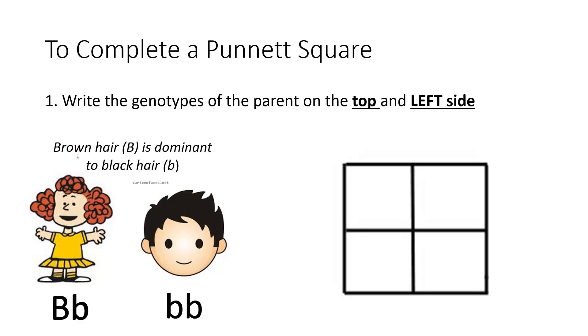In this example, brown hair, uppercase B, is dominant to black hair, lowercase b. The brown hair girl has a big B, little b. And then the boy that has black hair has a recessive trait of two lowercase b's. So my first step is to write the genotype on the top and left-hand side. I'll take the big B, put it on the top, and then I'll take the genotype of the father and put it on the left-hand side. I have completed step one.